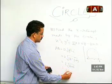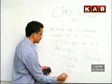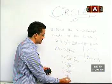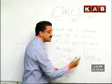2 into √27. This is 9 into 3. So 6√3 is the x-intercept.